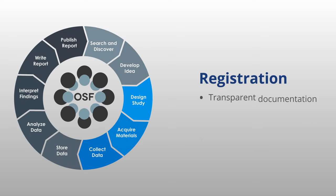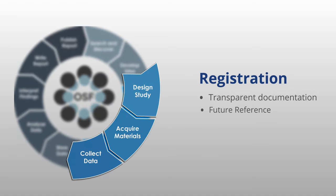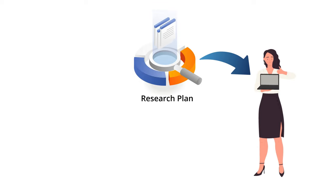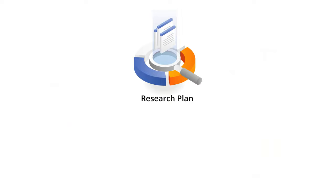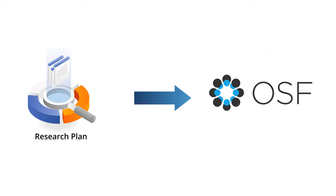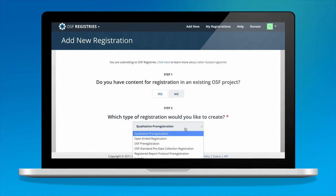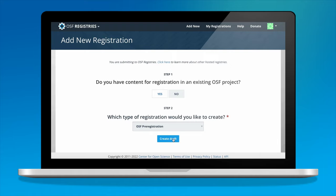Now that Sophia has a good idea for a research project, she wants to begin to design a study and start collecting any materials she might need. While searching for an idea, she was able to see firsthand how valuable it is to share your research plan for not only the credibility of the researcher, but the benefit of the scientific community. She's excited to take her first step in open science practices and recognizes that the research plans she found are called pre-registrations. In order to be as transparent as possible and to document her idea for future reference, Sophia decides to put together a pre-registration in the OSF.